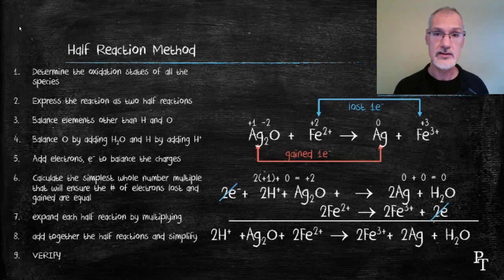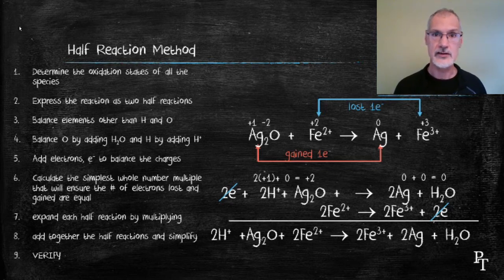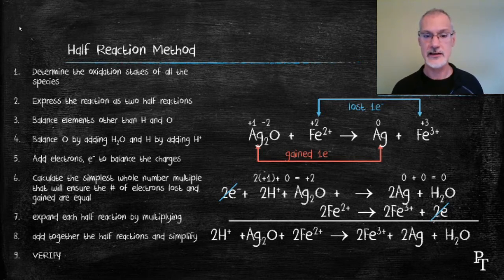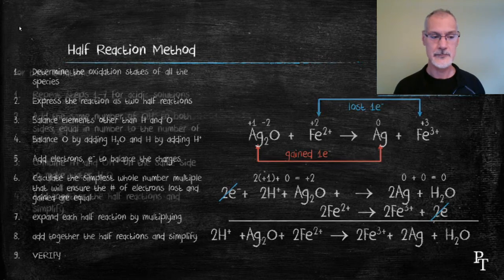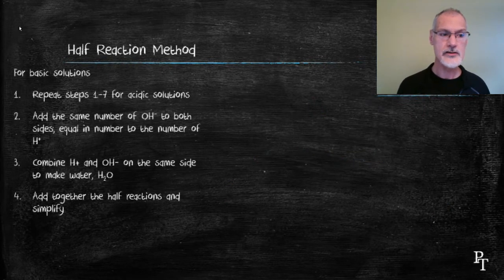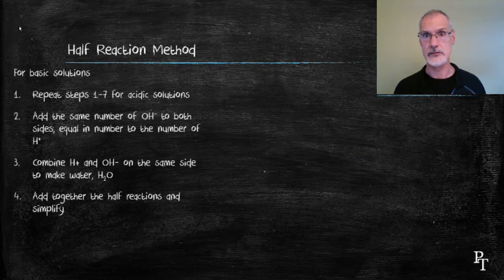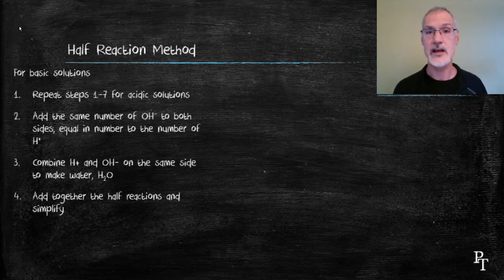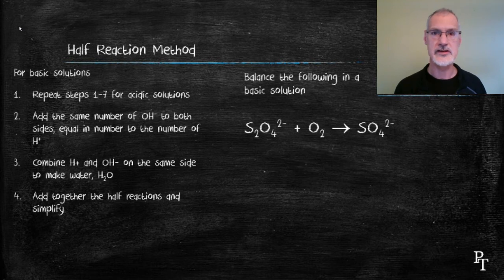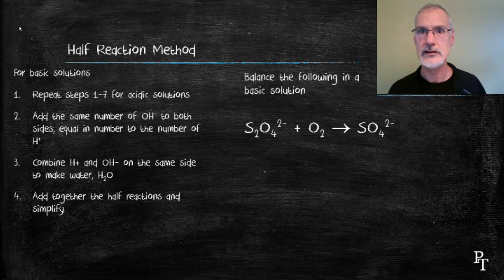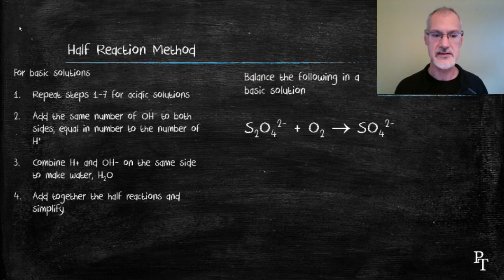Again, check the number and type of atoms as well as the total charge. On the left-hand side the total charge is plus six, and on the right-hand side the total charge is also plus six. Now we can also balance equations in basic solutions. To do that, we repeat the steps used for balancing in an acid and then add three more steps. Let's take this equation and balance it first in an acid solution.